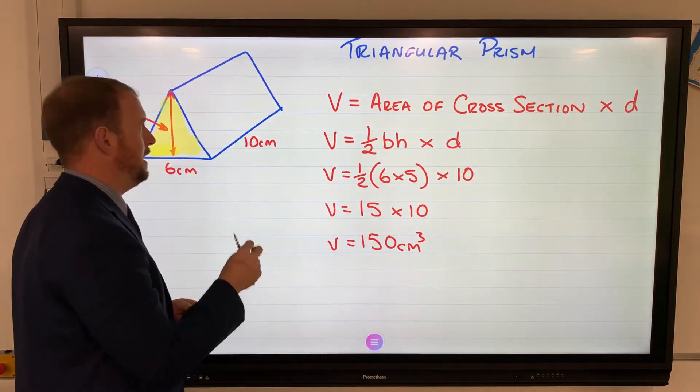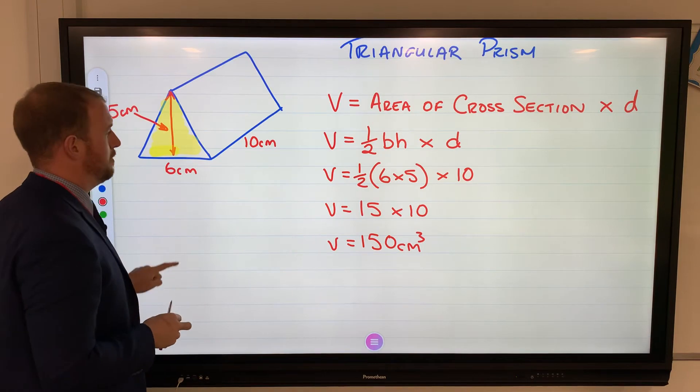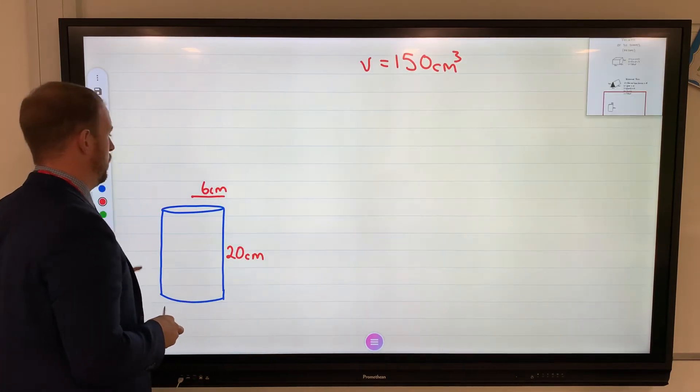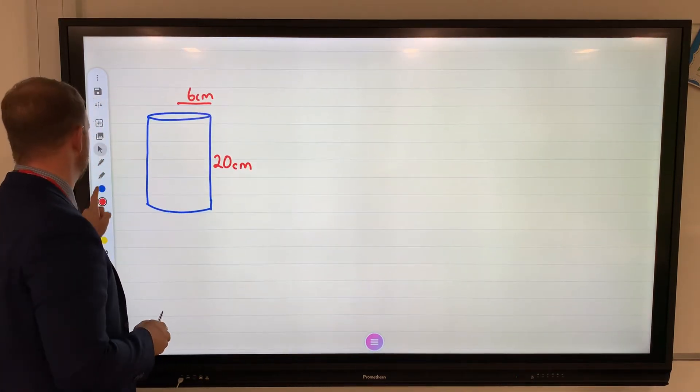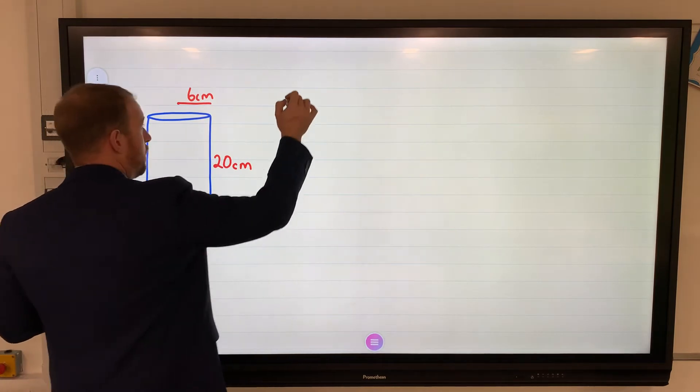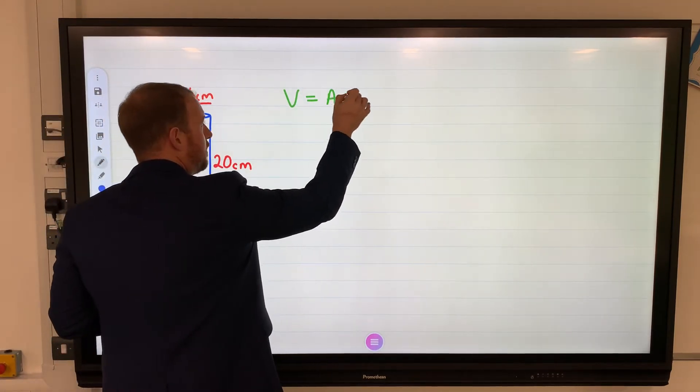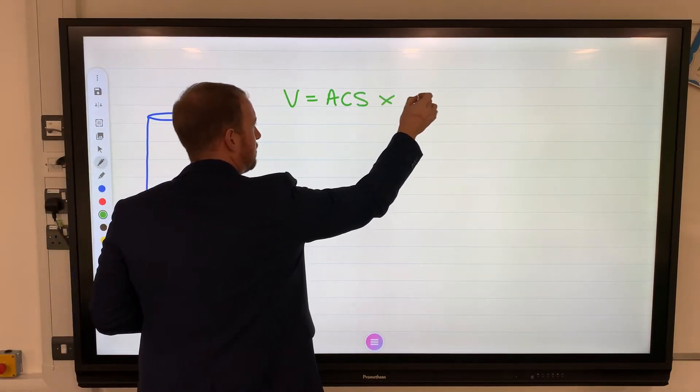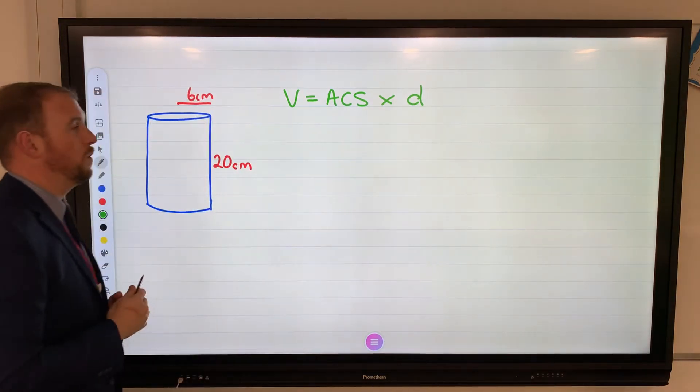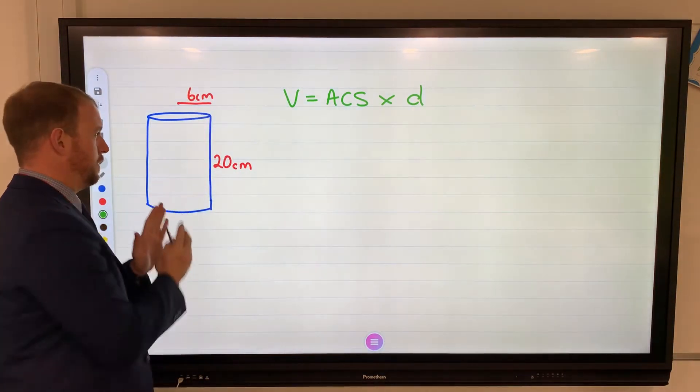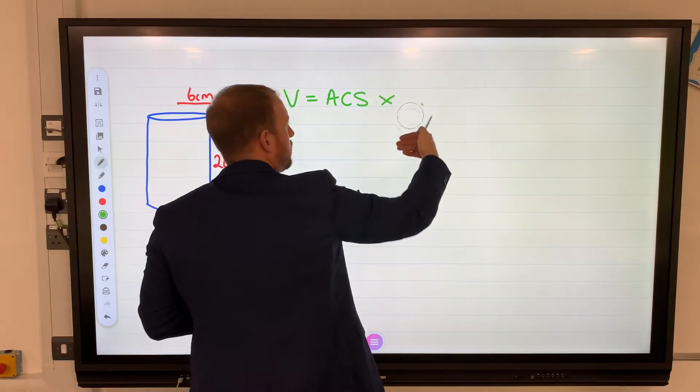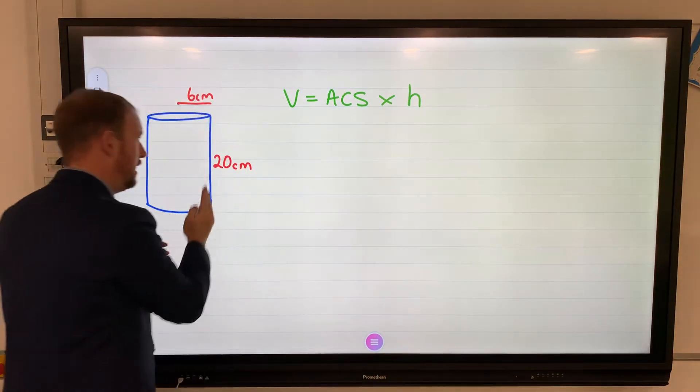So again, volume equals area of the cross section times the depth or the height. As we'll look at this one from side on, I'm going to use the word, the letter h for height, so you can clearly see it's how high the shape is.